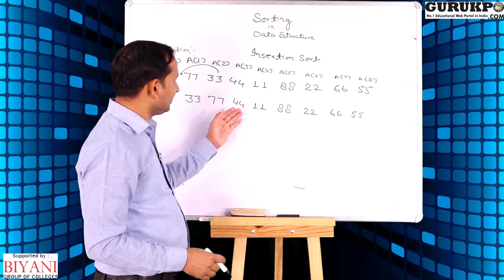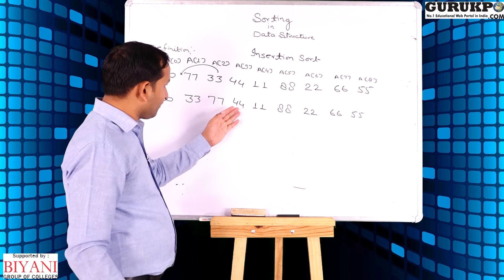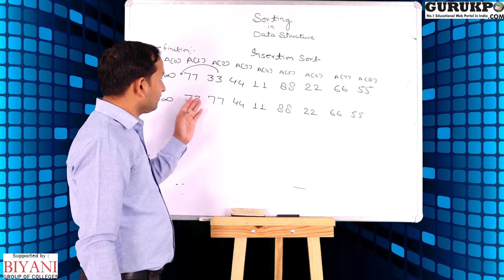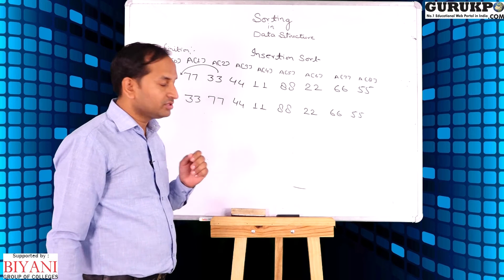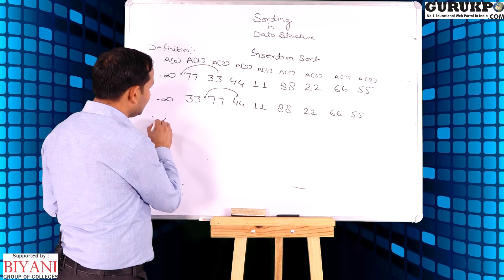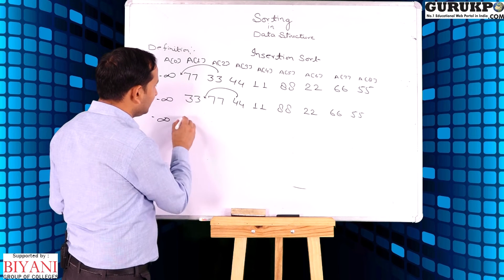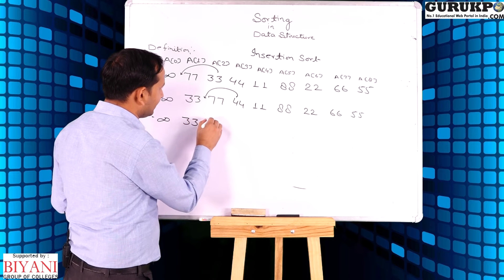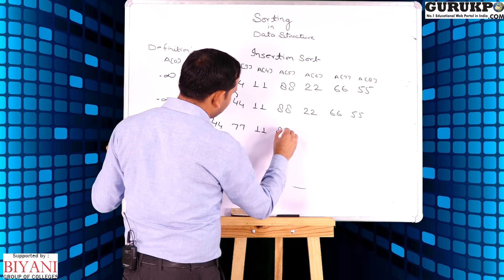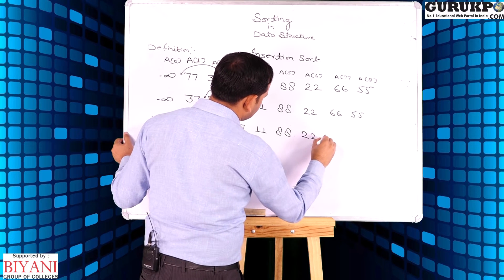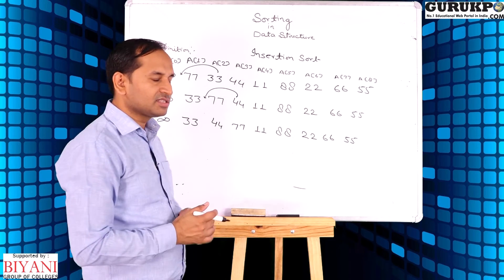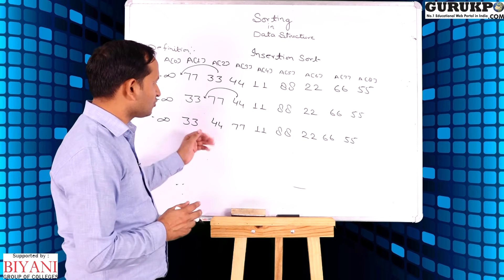Now we take the third element, that is 44. We compare 44 to 77 — it is less than 77. We again compare to 33 — 44 is greater than 33. So its exact location is in between 33 and 77, and we insert 44 in between them. Now the first three elements, 33, 44, and 77, are sorted.